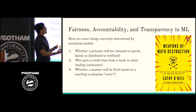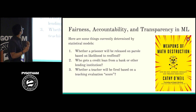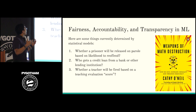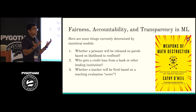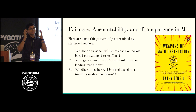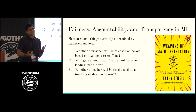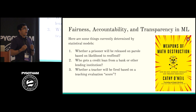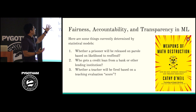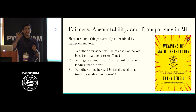So why is this an issue? There's a really good book called Weapons of Math Destruction by Kathy O'Neill. She talks about some of the dangers of how we use algorithmic and mathematical models in society. We're currently using statistical models for things like whether a prisoner will be released on parole, how long their sentence should be, who gets a loan from a bank, and teachers being evaluated on some black box model that says you're a good teacher or not.